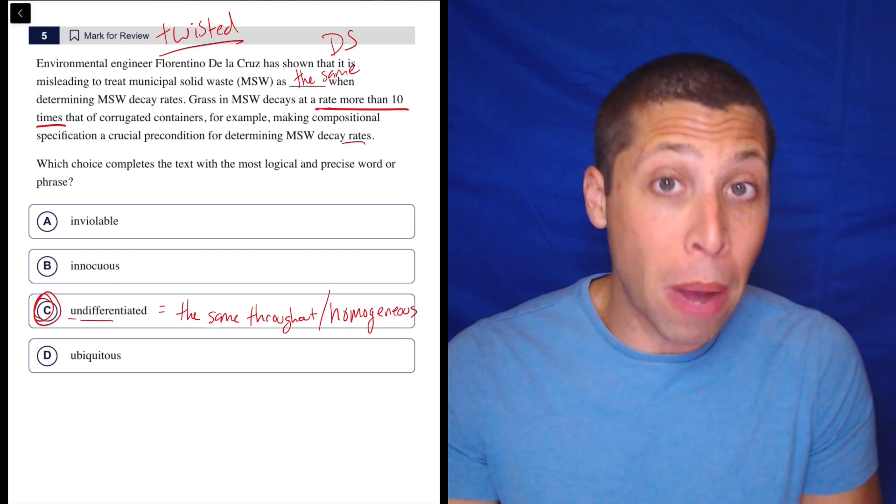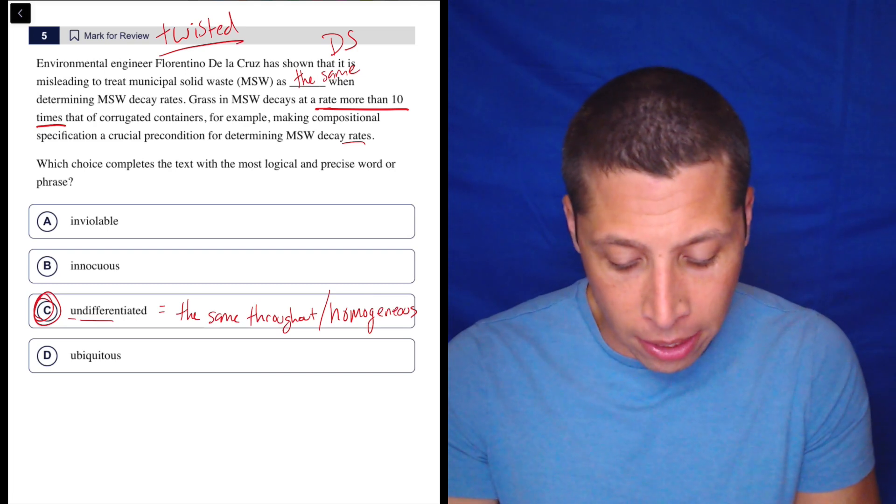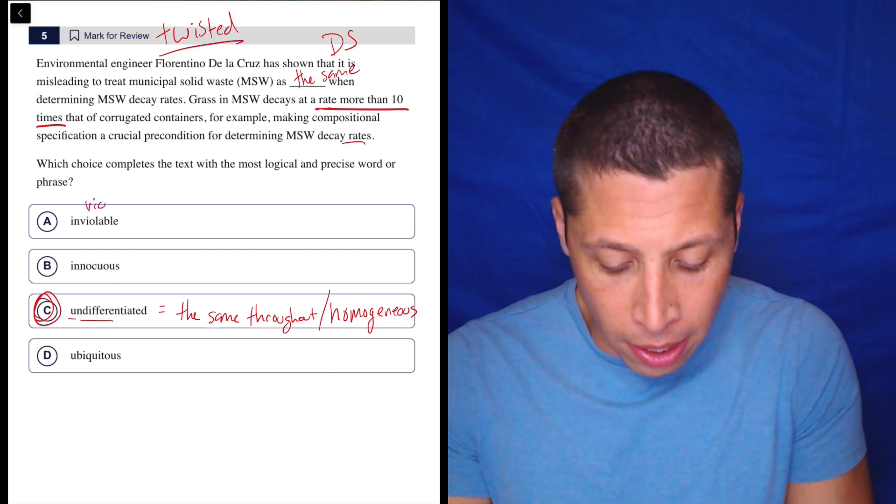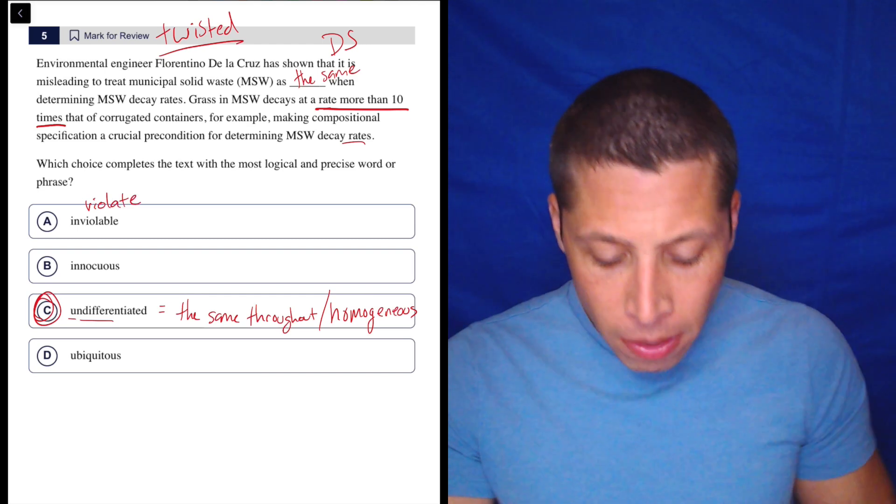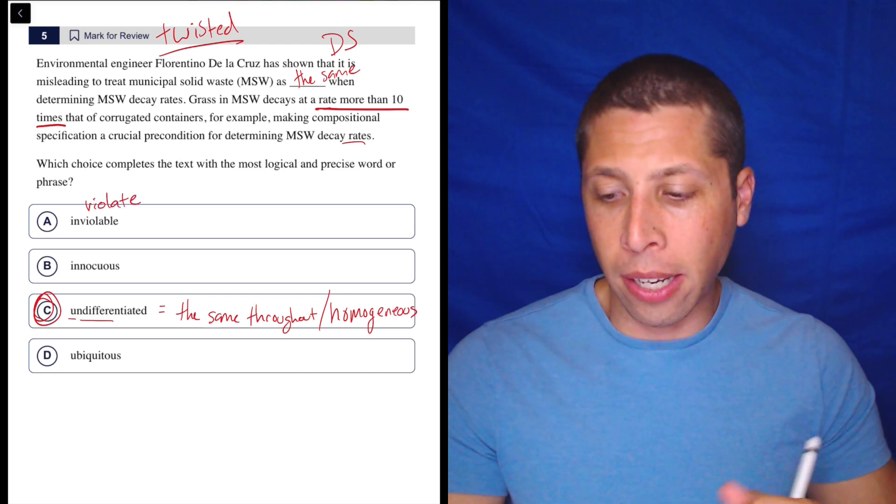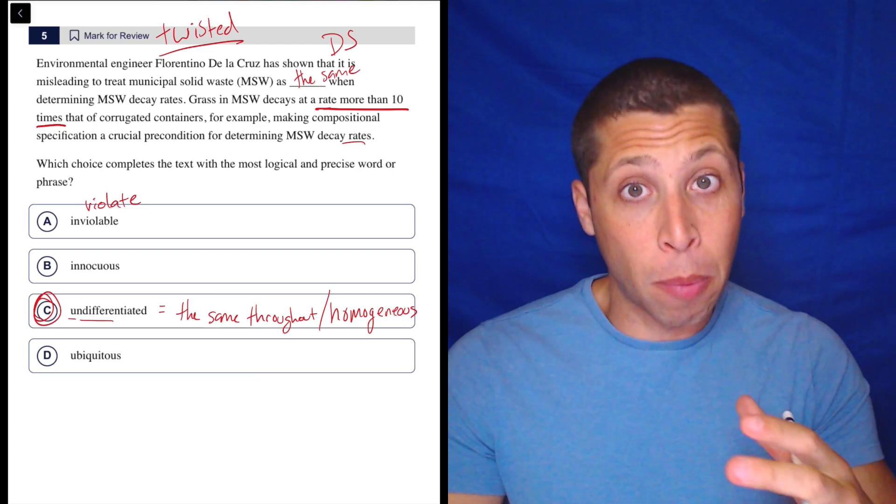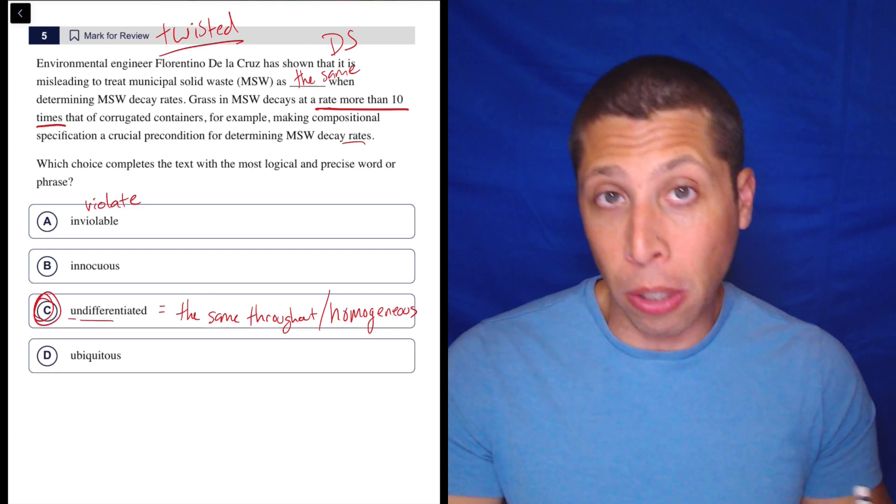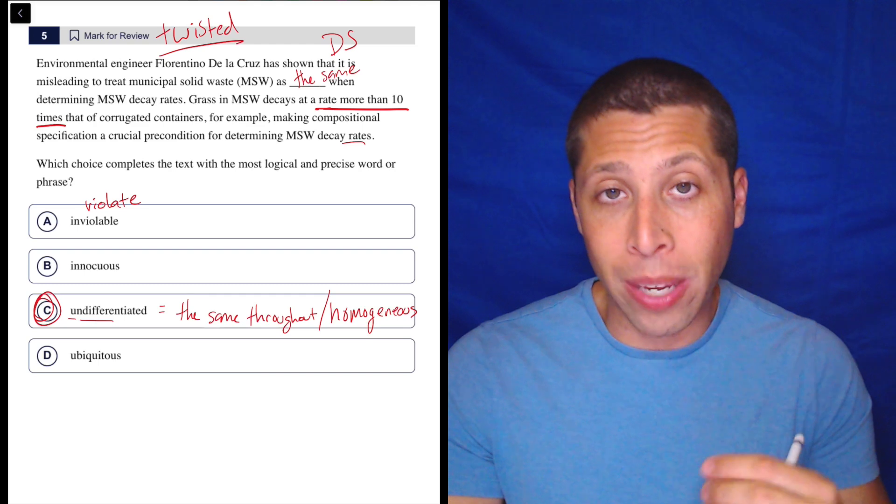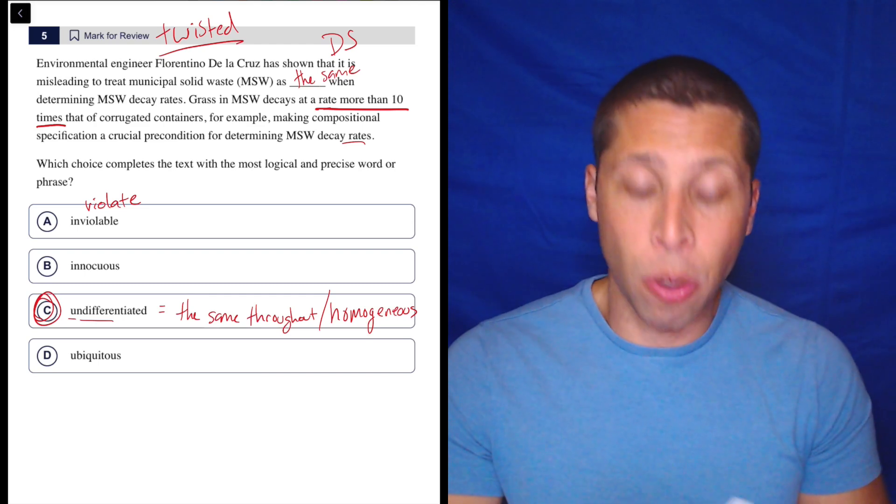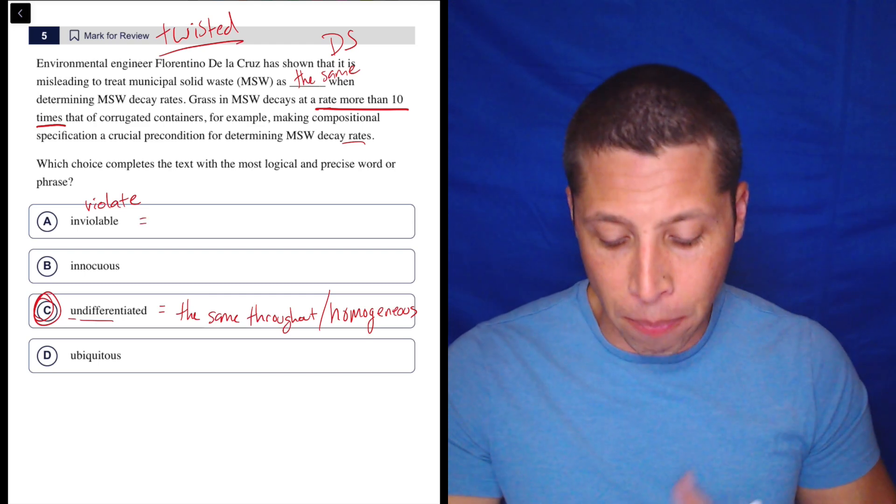So inviolable is another one you might be able to take apart and understand. So it involves the word violate. And to violate is to kind of like harass or kind of get into when you're not supposed to. So inviolable means it cannot be violated, right? So in means, again, not.